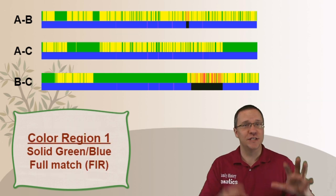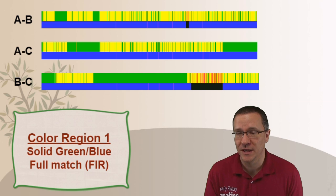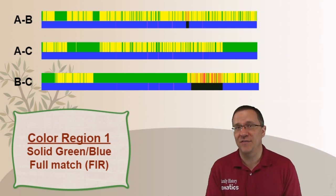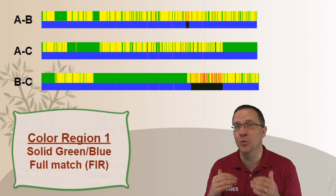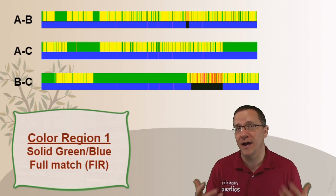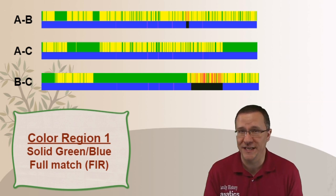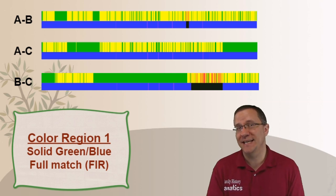Now there's some terminology that just needs to be understood that I'm going to be using throughout this and this has to do with the color region. So the first color region is if you have a solid green on the top line and a blue bar underneath that, then that is a full match or an FIR, a fully identical region. So green on top with blue on bottom means it is a full match and that's always going to be the case.